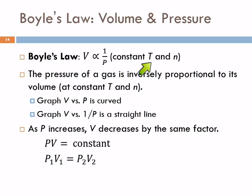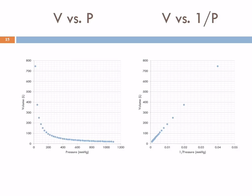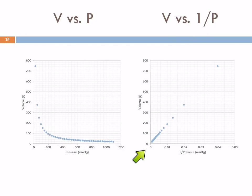This is true if the temperature is kept constant and if the amount of gas is kept constant. If you're adding more gas or letting gas out, or if the temperature changes, then this isn't going to be true anymore. If we graph volume versus pressure, we get a curved line. But if we graph the volume versus 1 over the pressure, the data gives us a beautiful straight line, and we can have an equation that describes the relationship between volume and pressure.